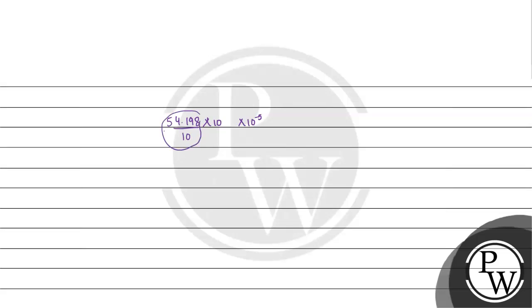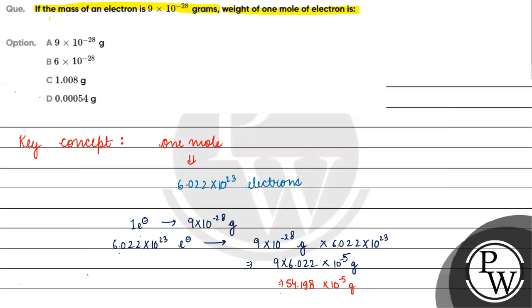Converting to proper scientific notation, it will be 5.4198 into 10 raised to the power minus 4 grams. Coming back to the question, the correct answer for this question will be option D. I hope you understood it well. Thank you.